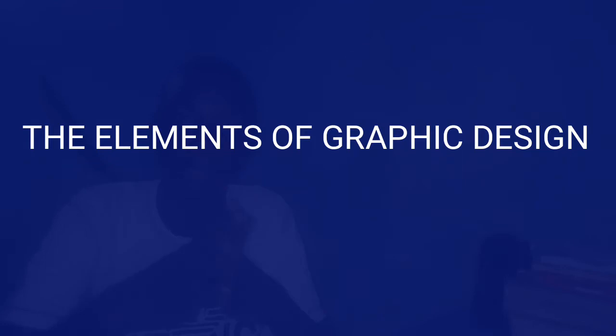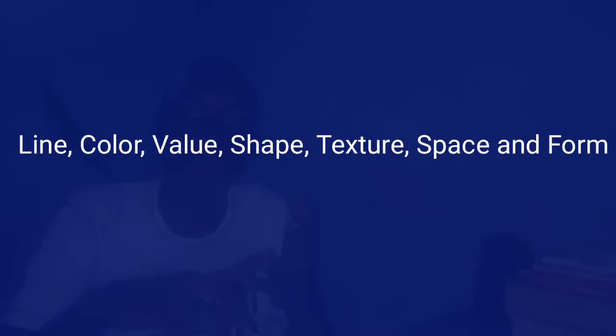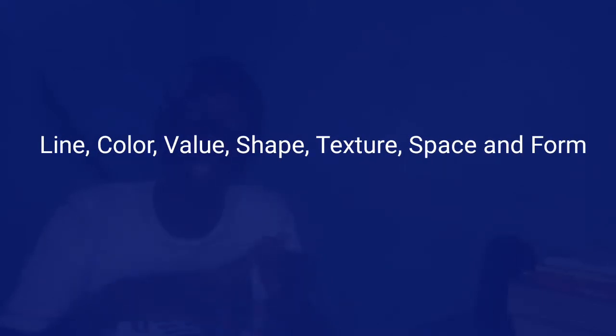What are the elements of graphic design? Graphic design elements are the most fundamental ingredients from which all designs in the world are created. They serve as raw materials used together by graphic designers to achieve a certain design. These elements are: line, color, value, shape, texture, space, and form.